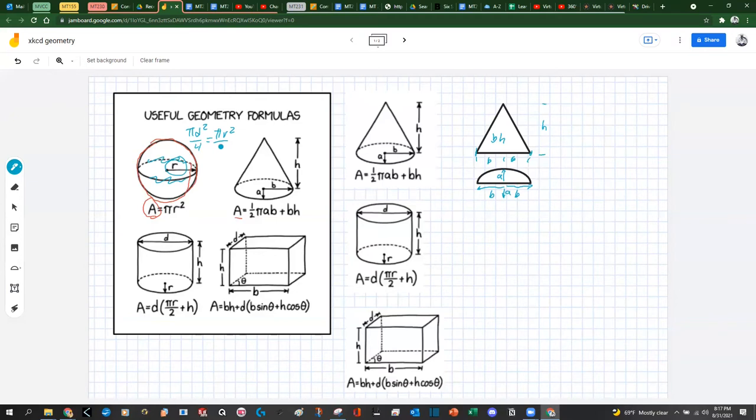So the area of an ellipse is going to be pi times a times b. Now, notice how if this were a circle, a would be equal to b, and therefore the radius would be the same. So pi times a times b. But since we only have half of this ellipse, we have to divide this all by 2. So we end up with one half pi times a times b. And so we've got bh, which is here, and then one half pi times a times b.